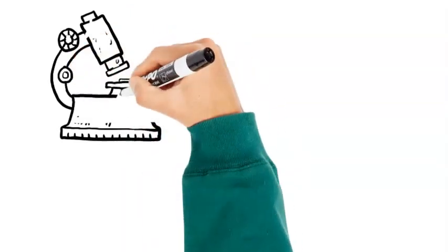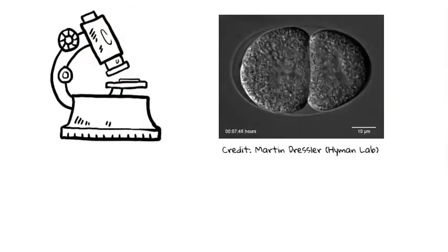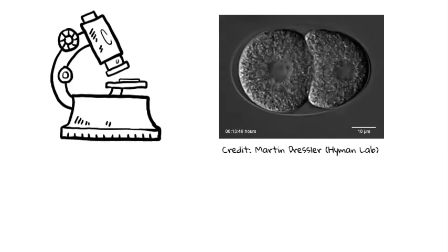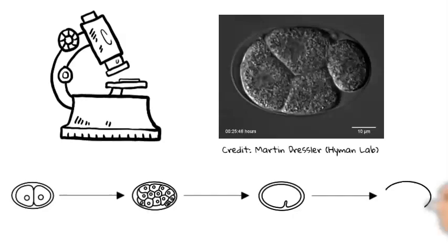We chose to take a closer look at this little creature because it is completely transparent, and so you can easily follow how it develops. In fact, it develops so fast that within half a day you can see a fertilized egg cell change into a little larvae.